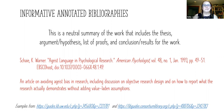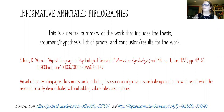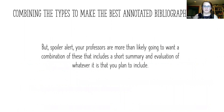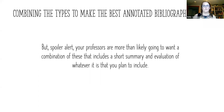For that same 'Ageist Language and Psychological Research' article, an informative entry would be: an article on avoiding ageist bias in research, including discussion on objective research design and on how to report what the research actually demonstrates without adding value-laden assumptions. But spoiler alert — your professors are probably going to want a combination of a short summary and how you're going to use it in your research.